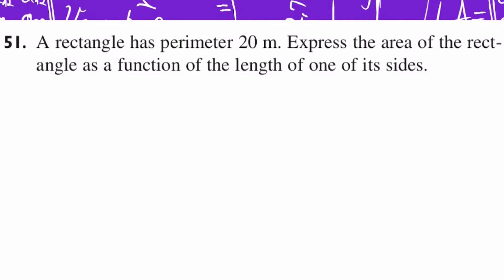Hi guys, welcome to this new video. Today we're going to be solving the next exercise. It says, a rectangle has a perimeter of 20 meters. Express the area of the rectangle as a function of the length of one of its sides.